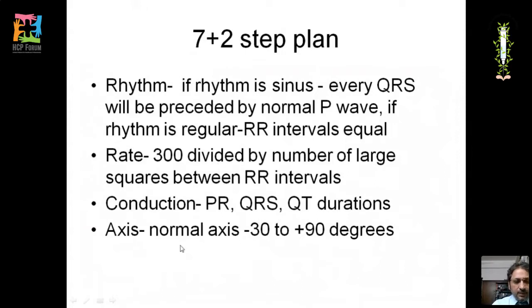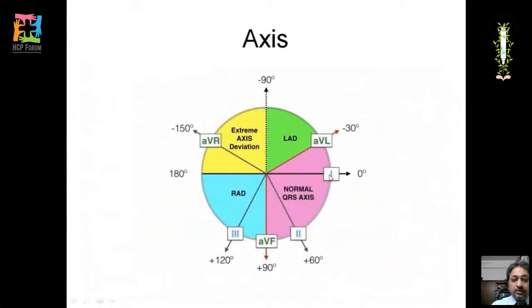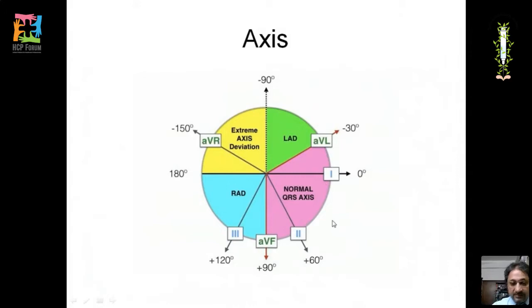The normal heart axis is from minus 30 to plus 90 degrees. It is calculated using two perpendicular leads: lead I (0 to 180 degrees) and lead AVF (90 to minus 90 degrees). If lead I and AVF are both positive, the axis is normal. If lead I is positive and AVF is negative, it is left axis deviation. If AVF is positive and lead I is negative, it is right axis deviation.